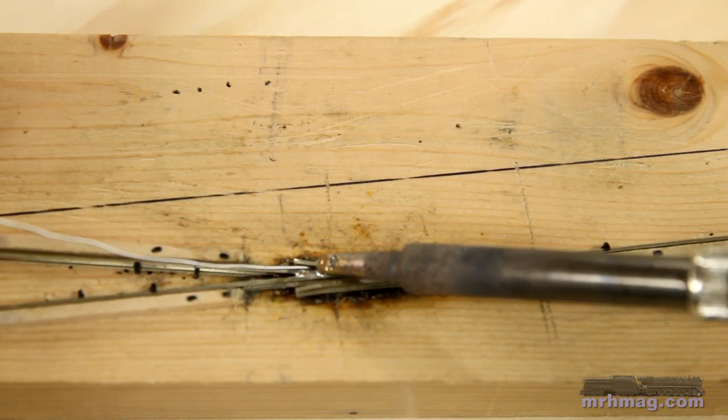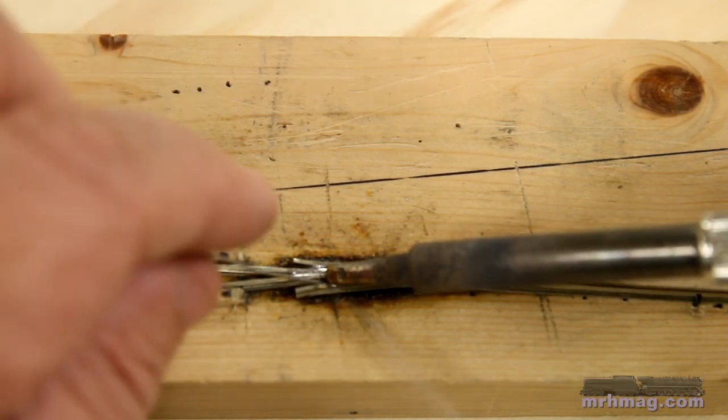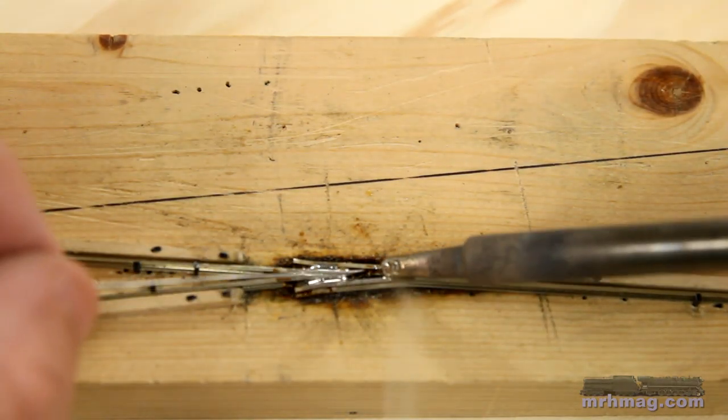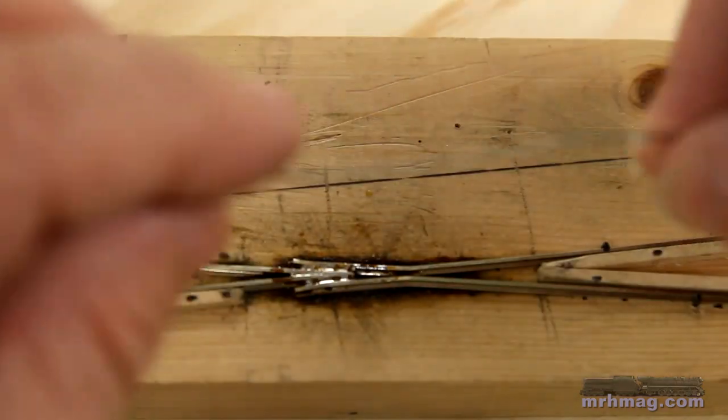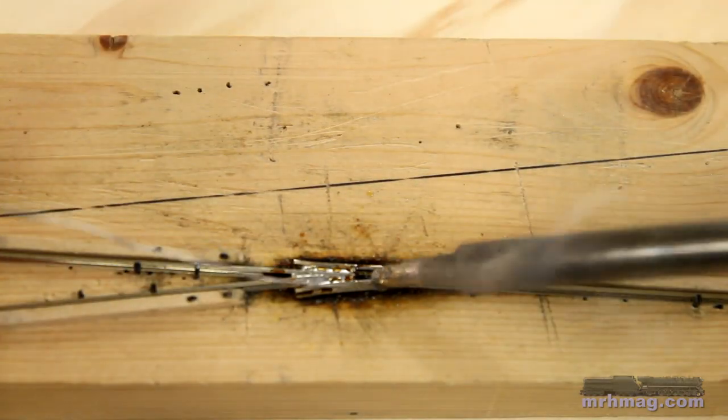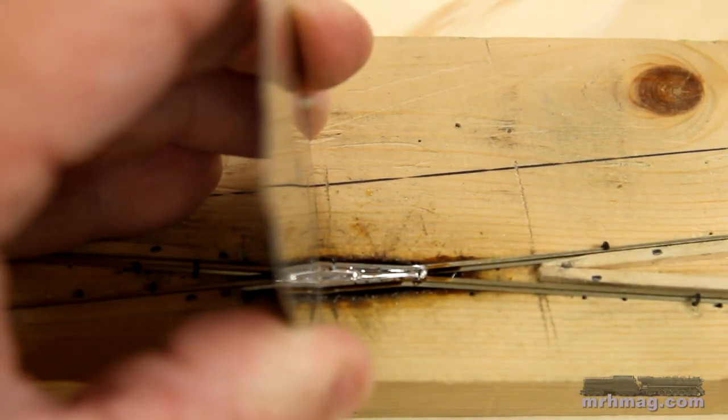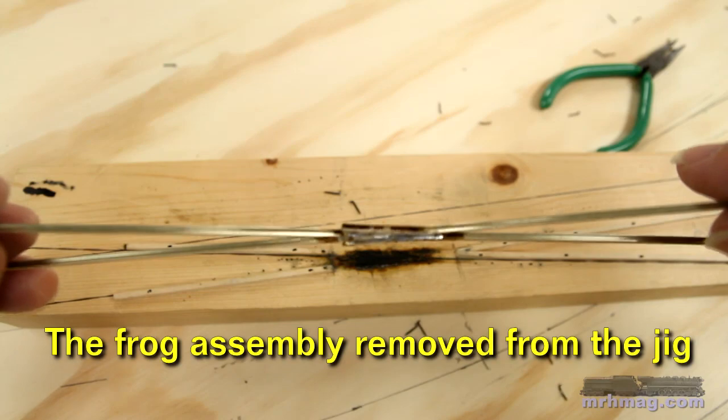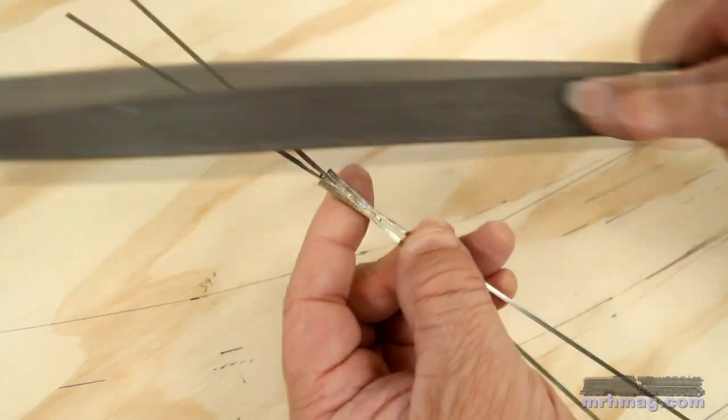I prefer to solder my frogs. This will hold all the rails right where you put them. It can take a lot of solder to fill a frog. I press down on the rails to keep them level as I finish soldering.